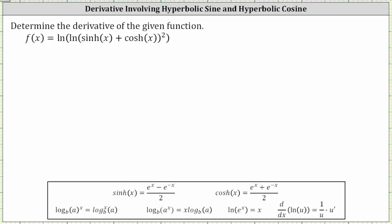We're asked to determine the derivative of the given function. Let's begin by simplifying the function by determining the sum of hyperbolic sine of x and hyperbolic cosine of x. We'll do this by writing both functions in their exponential forms, where hyperbolic sine of x equals e to the x minus e to the negative x divided by two, and hyperbolic cosine of x equals e to the x plus e to the negative x divided by two.